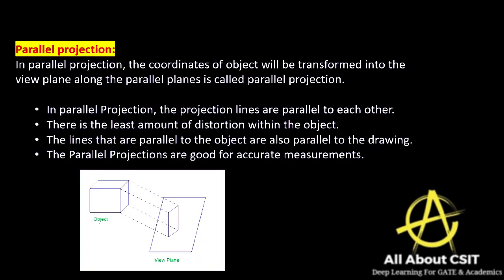In parallel projection, the coordinates of the object are transformed into the view plane. Each object has coordinates because to display on a view plane we need coordinates — in 2D, XY coordinates are required. Along the parallel plane this is called parallel projection, and the projection lines are parallel to each other.